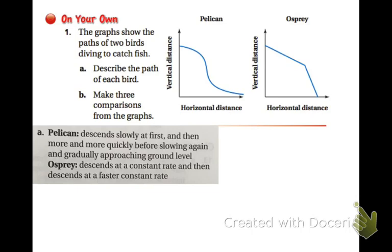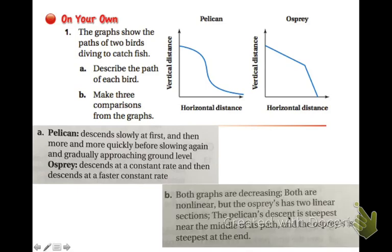For part B, make three comparisons from the graphs. Well, we can tell that they are both decreasing. We know that they're both nonlinear. And if you look at the pelican, it's steeper in the middle. And at the osprey, it's steeper towards the end. So we can say both graphs are decreasing, both nonlinear. The osprey has two linear sections. So it's two straight lines kind of connected at a joint there in the middle. And then the pelican's descent steepest in the middle and the osprey steepest at the end.